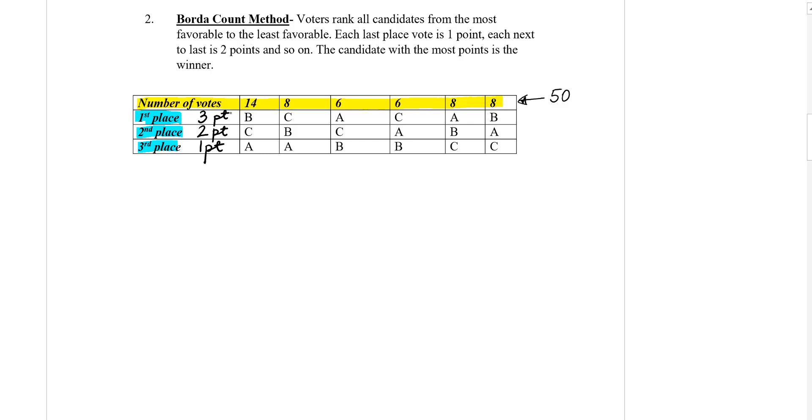So we add one starting with the bottom. The last place or the lowest place would be one point, and then the place before that is going to be two points, and so on. Now, this is how we are going to add the points.